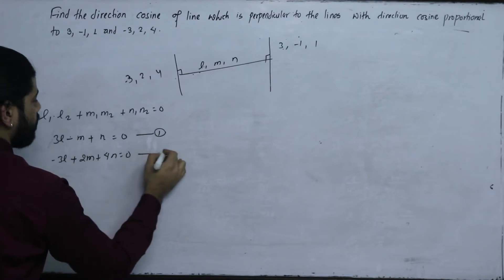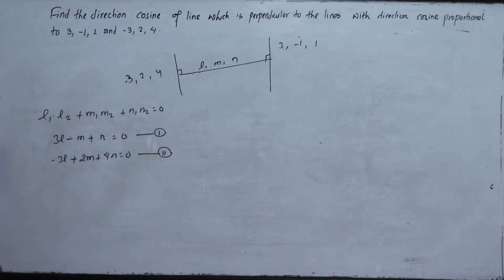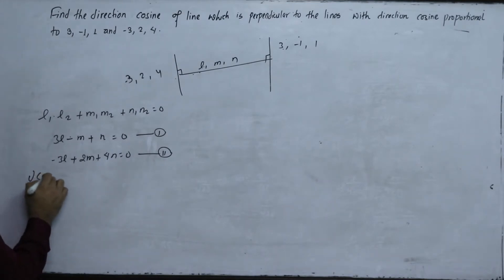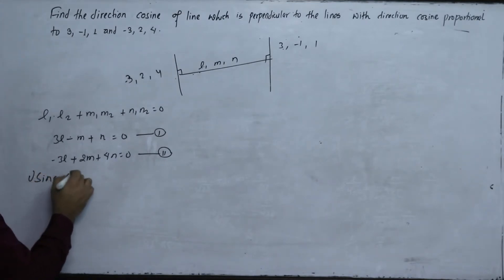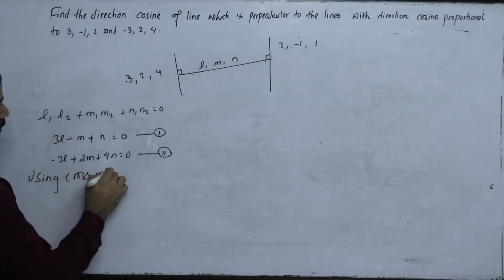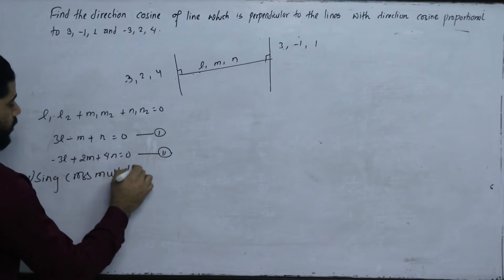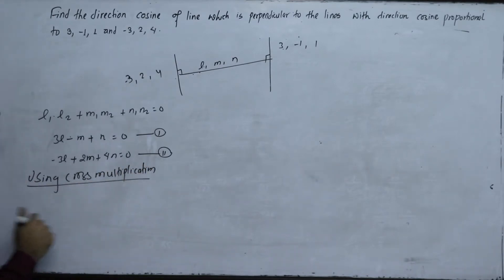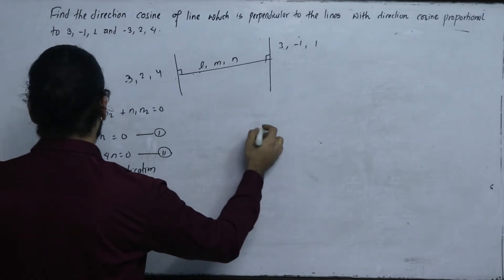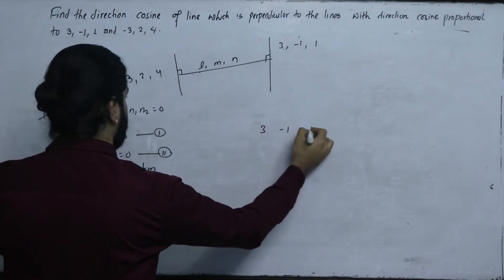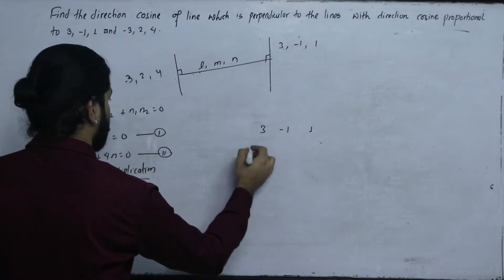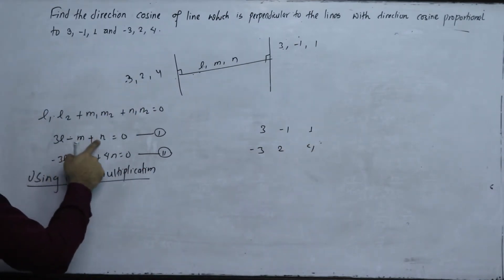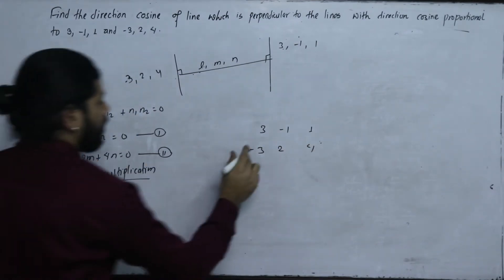These equations can be solved using the cross product method. We set up the cross matrix with values 3, minus 1, 1 and minus 3, 2, 4.